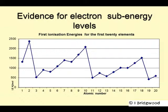Now we need to consider sub-energy levels and evidence for the existence of these sub-energy levels. We look at our graph of first ionization energies for the first 20 elements and consider the little drops in ionization energy between elements 4 and 5, beryllium and boron; 7 and 8, nitrogen and oxygen; 12 and 13, magnesium and aluminium; and 15 and 16, phosphorus and sulfur.